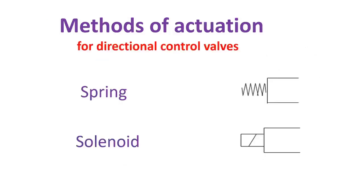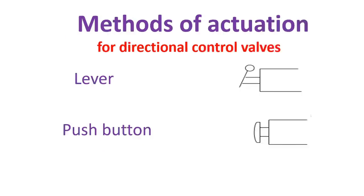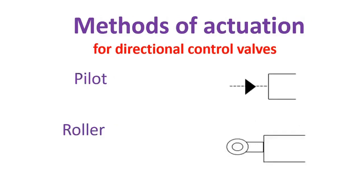The next topic is the method of actuation for directional control valves. This is the symbol for spring. The next one is symbol for solenoid. Lever. And push button. Pilot. Next, roller.